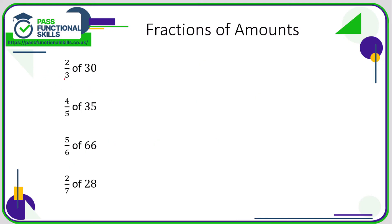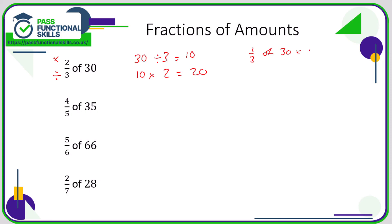When you've got two thirds or four fifths, you need to divide by the number on the bottom and then multiply by the number on the top. Take thirty, divide it by three to get ten, then multiply by two — the answer is twenty. We're working out one third of thirty first, which is ten, so two thirds of thirty is twice as much, which is twenty. But keep it simple: just divide by the bottom number and multiply by the top number.